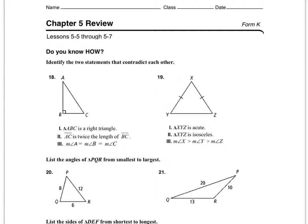Continuing with question 18, I need to identify the two statements that contradict each other. Statement one says triangle ABC is a right triangle. Statement two says AC is twice the length of BC. Statement three says the measure of angle A equals the measure of angle B equals the measure of angle C. If all angles are congruent in a triangle, each must be 60 degrees — but statement one says it's a right triangle, meaning at least one angle is 90 degrees. So statements 1 and 3 are in direct contradiction.